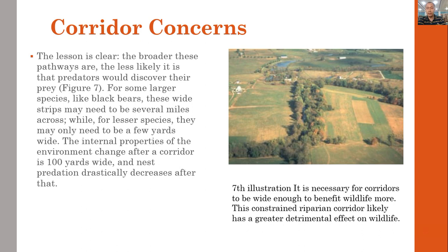In Illustration 7, it is necessary for corridors to be wide enough to benefit wildlife. A constrained riparian corridor likely has a greater detrimental effect on wildlife. The lesson is clear: the broader these pathways are, the less likely it is that predators will discover their prey. For some larger species like black bears, wide strips may need to be several miles across, while for lesser species they may only need to be a few yards wide. Based on scientific study, internal properties of the environment change after the corridor is 100 yards wide, and nest predation decreases drastically after that point.